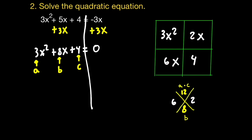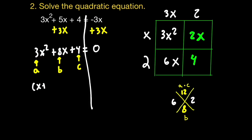I'll focus on the bottom row: the GCF between 6x and 4 is 2. Next, zooming in on the right column, the GCF between 2x and 4 is also 2. Strategically guessing the missing values: 2 times what gives 6x? That's 3x. And 3x times what gives 3x squared? That's x. Verifying: x times 3x is 3x squared, x times 2 is 2x, 2 times 3x is 6x, and 2 times 2 is 4. This means I can factor this trinomial as (x plus 2) multiplied by (3x plus 2), and that equals 0.